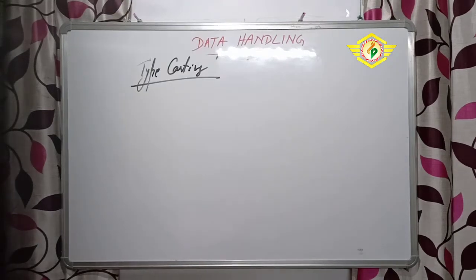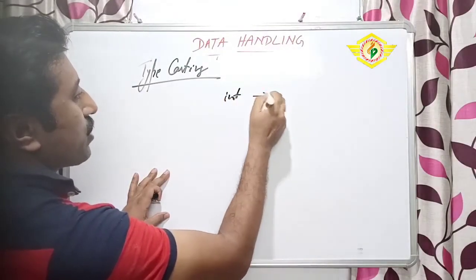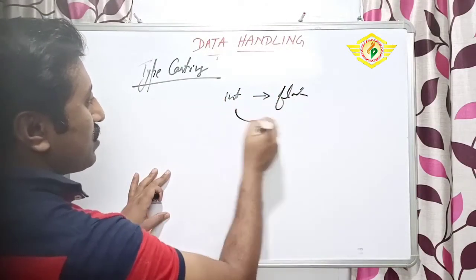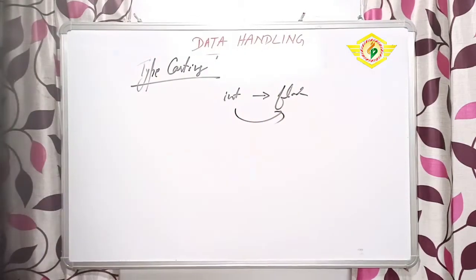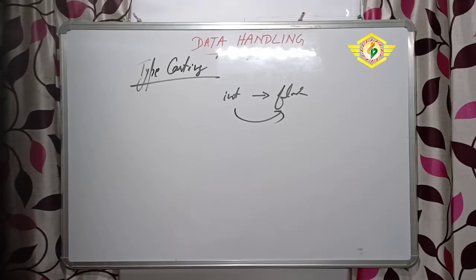Next we will discuss about type casting. What is type casting? Type casting, in another word, we can say it is the explicit type of conversions. When one conversion changes to a different type - suppose one value was in integer type, now we have converted to floating type - changing the conversion is known as type casting. It is known as the explicit type of conversion of an operand to a specific type.